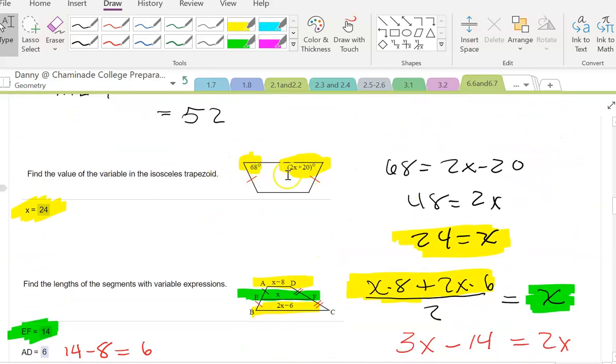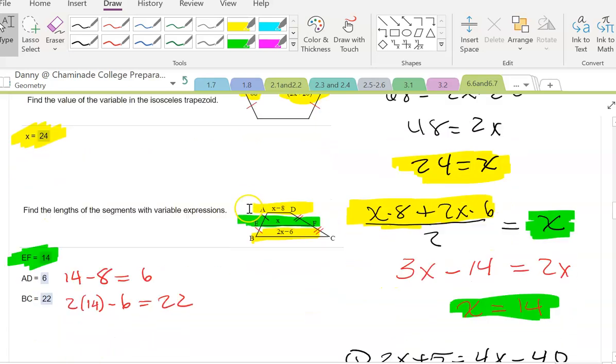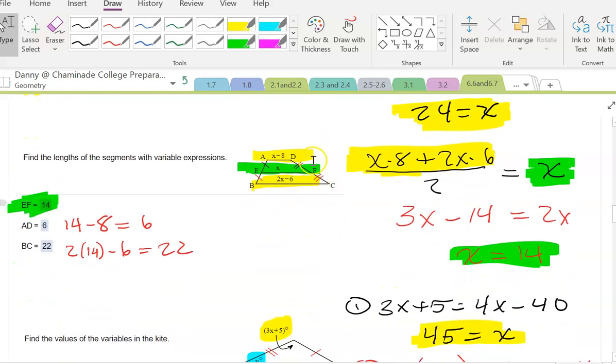Here these base angles are congruent, so we set them equal to each other, solve for x, bada boom. Same thing here, we're setting up this mid-segment, so we're adding our bases, dividing by two, equaling our mid-segment, which is x. Multiply by two here to get 2x. x plus 2x is 3x, negative eight and negative six is negative 14, solve. And then we simply plug in for these other values.